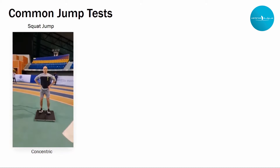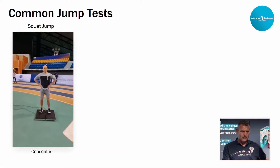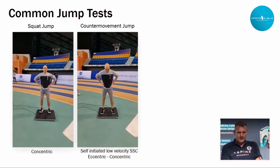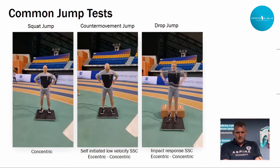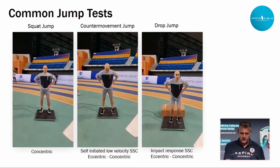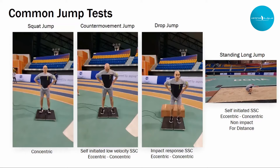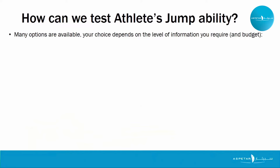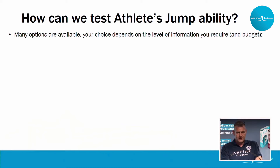Common jump types: the squat jump starts in a squat position and is essentially a measure of concentric muscle output. The counter movement jump starts upright, you bend down, initiating a low-velocity stretch-shortening cycle — eccentric followed by concentric. The drop jump is an impact-response stretch-shortening cycle with an eccentric-concentric phase. We must also remember jumps in the horizontal direction, like the standing long jump — a self-initiated stretch-shortening cycle with no impact, this time for distance.